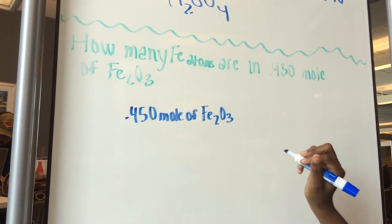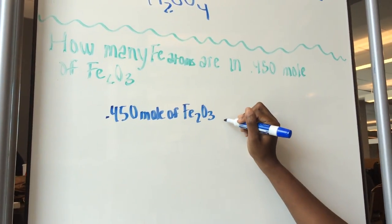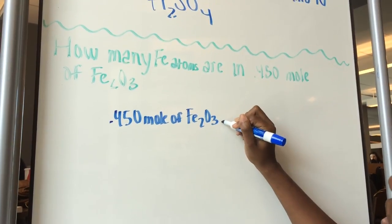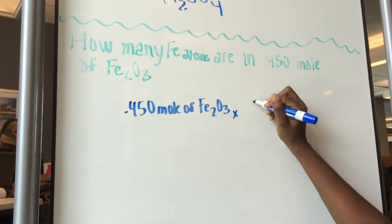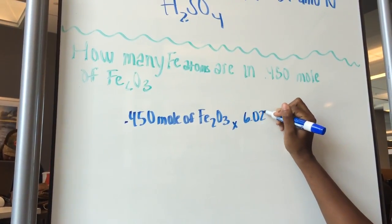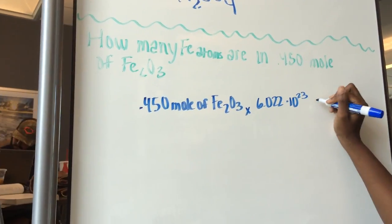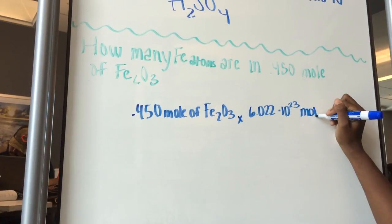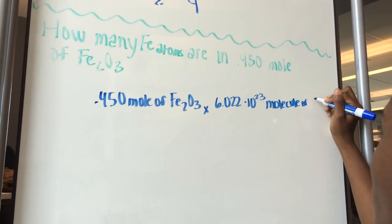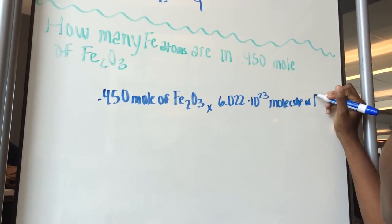So we know that we have to go across, so we're trying to find atoms. The first thing that we're going to do is multiply by Avogadro's number. So we're going to multiply by 6.022 times 10 to the 23rd molecules of Fe2O3.